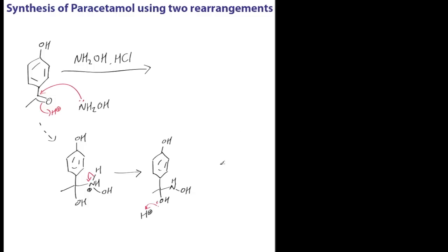The overall aim is to lose water as a leaving group and give us our oxime. We do that in a series of protonation steps. The first one was forming the tetrahedral intermediate, and now we're going to protonate the hydroxyl.